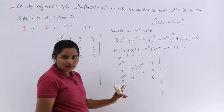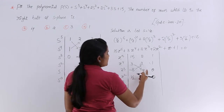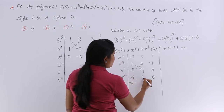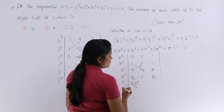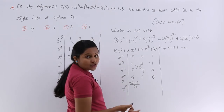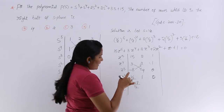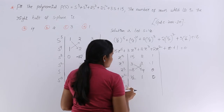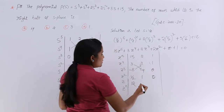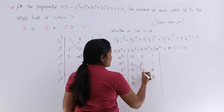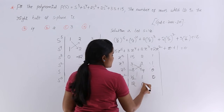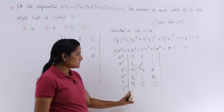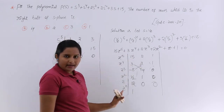For the z¹ row: (1/2 × (−4) − (−8) × 1) / (1/2) = (−2 + 8) / (1/2) = 6 / (1/2) = 12. For the next element, multiplying with zeros gives 0. The z⁰ term is always the constant in the characteristic equation, so it is 1. This completes the Routh array for Case 1.